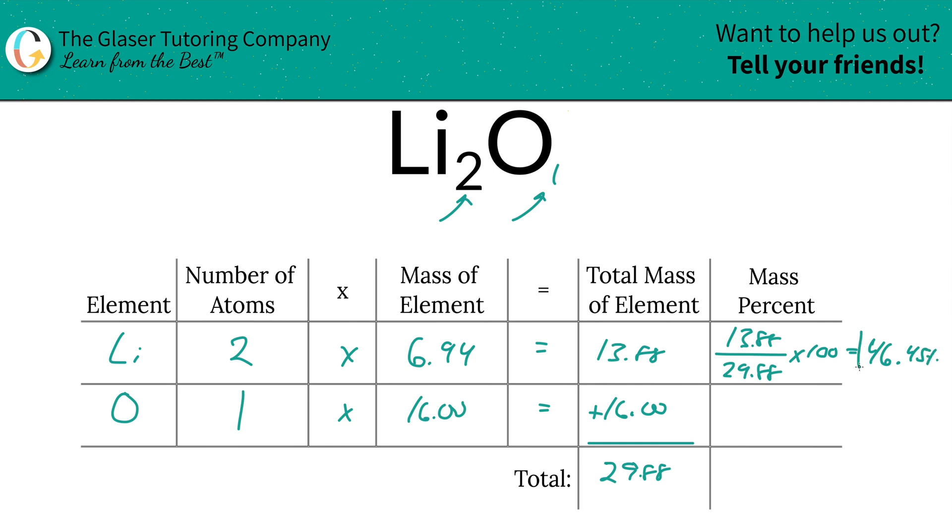Then we're going to do the same thing for oxygen. Take the total mass of that oxygen, divide it by the total of the entire compound, multiply that by 100, and the percentage here should be roughly 53.55. This should sum up to be 100—it's a nice little way to check.